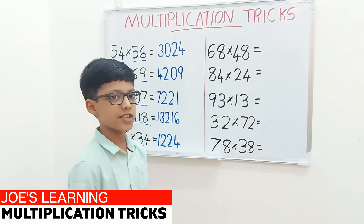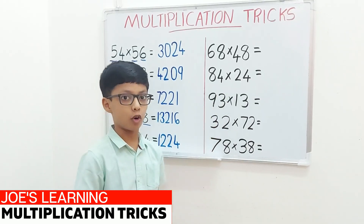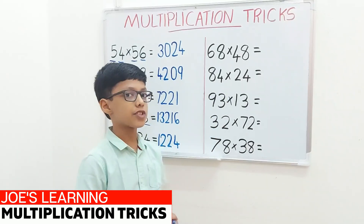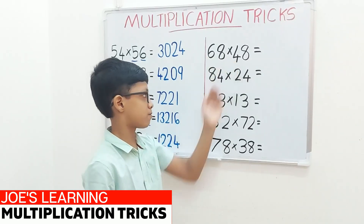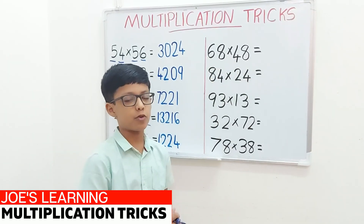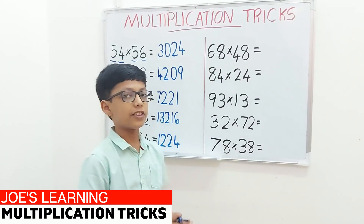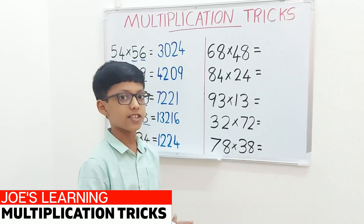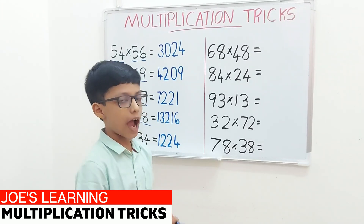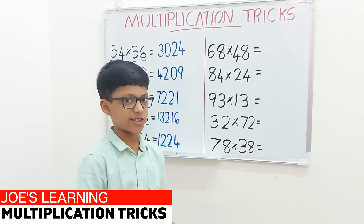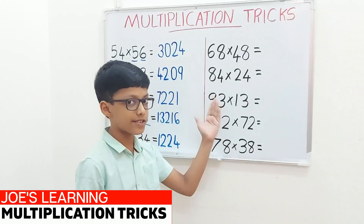Now let's move on to the next trick. As I said, this trick can only be used if the sum of the digits in the tens place equals 10 and the digits in the units place are the same. So now I will explain it in detail using some examples.